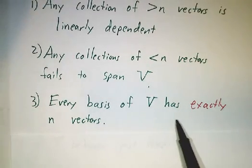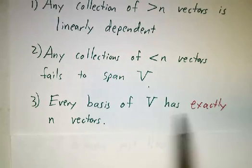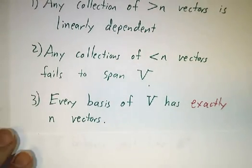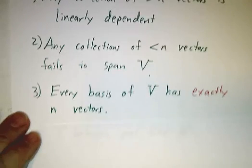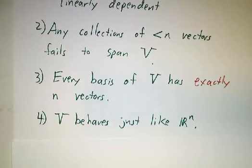Every basis of V has the same number of vectors. If V has one basis with five vectors, then every basis of V has five vectors. We say that V is five-dimensional and it behaves just like R^5.